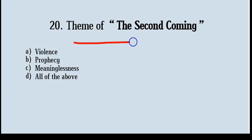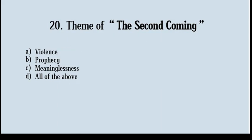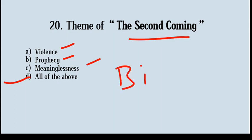Next question. Theme of 'The Second Coming'. Options: violence, prophecy, meaninglessness, all of the above. Correct answer: option number D, all of the above. Violence, prophecy, and meaninglessness are the major themes in the poem 'The Second Coming'. Yeats emphasizes that the present world is falling apart and a new ominous reality is going to emerge. The idea of the second coming is not a biblical one.